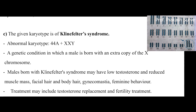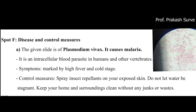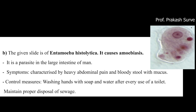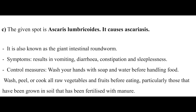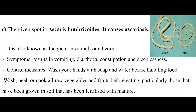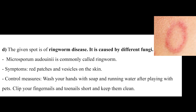Next is spot F, about diseases and control measures. Here either you have to write the symptoms or the control measures. You may have a Plasmodium slide or Entamoeba. Next may be Ascaris. Next may be ringworm. Same here also, a slide or photograph will be there.